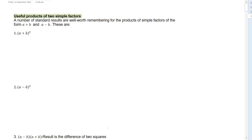Let us have here the last topics on the introduction to algebra, and then next is the linear equation. So we have here useful products of two simple factors. A number of standard results are well worth remembering for the products of simple factors of the form A plus B and A minus B. So these are: A plus B squared, A minus B squared, and the difference of two squares.